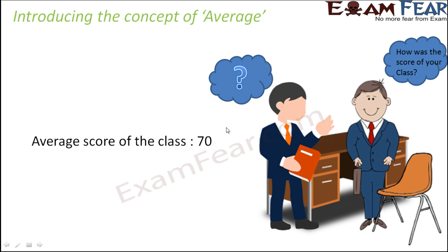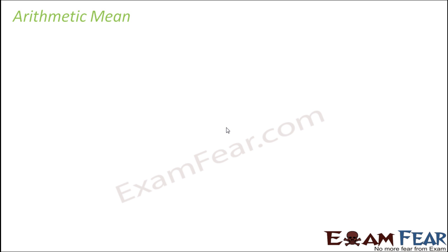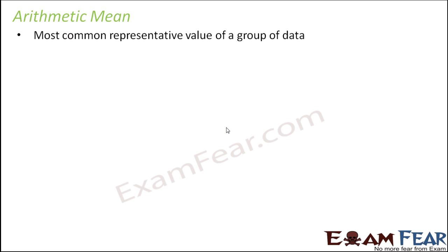So when you have a huge set of data, sometimes in order to interpret or to get some information out of that data, instead of representing all the data, what we do is we just take out the average. This is the best way for the teacher to convey to the principal the overall performance of the class. Here we talk about arithmetic mean. Arithmetic mean is a mathematical term for average — it is the most common representative value of a group of data. A representative value is one that is convenient and easy to represent, and at the same time conveys meaningful information about a group of data.